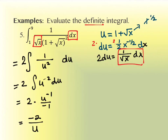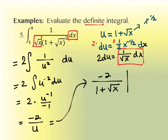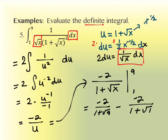I want that in terms of x, so this is negative 2 over 1 plus square root of x. Now I can evaluate with the x-values 9 and 1. Plugging in 9: negative 2 over 1 plus square root of 9 equals negative 2 over 4 equals negative 1/2. Plugging in 1 gives negative 2 over 1 plus 1 equals negative 2 over 2 equals negative 1. Subtracting: negative 1/2 minus negative 1 equals negative 1/2 plus 1 equals 1/2.